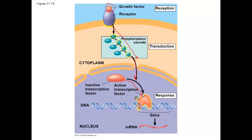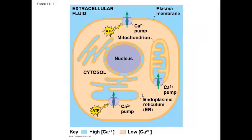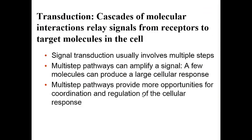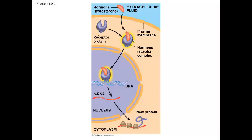Another important ligand that activates genes is steroid hormones like testosterone and estrogen. The key difference is that steroid hormones enter and pass right through the cell membrane, then bind to receptors within the cell. Once they bind to receptors within the cell, they enter the nucleus and activate genes leading to the production of proteins. So a major difference is that a growth factor is polar and binds to a receptor on the cell membrane, whereas a steroid hormone is non-polar and goes through the cell membrane to bind to a receptor within.